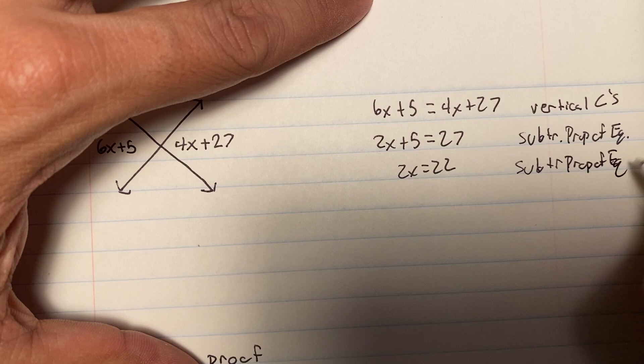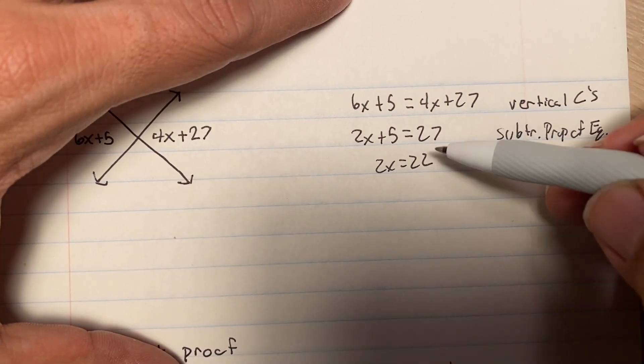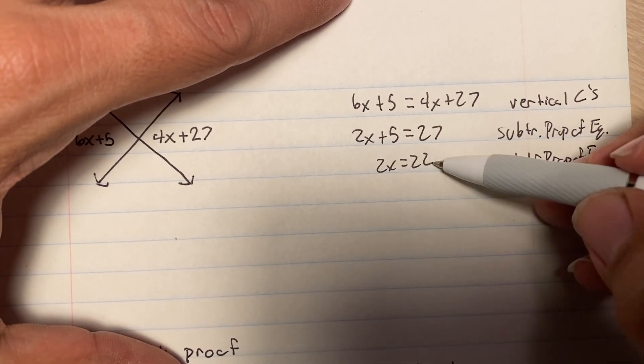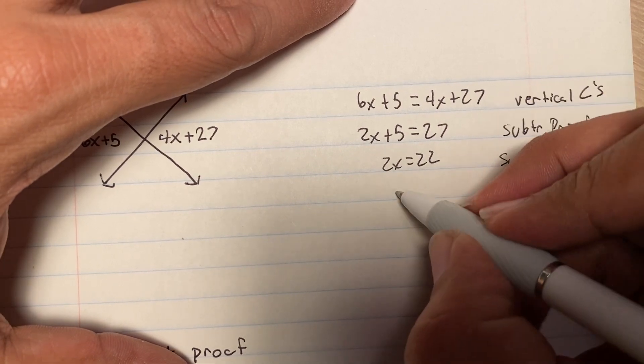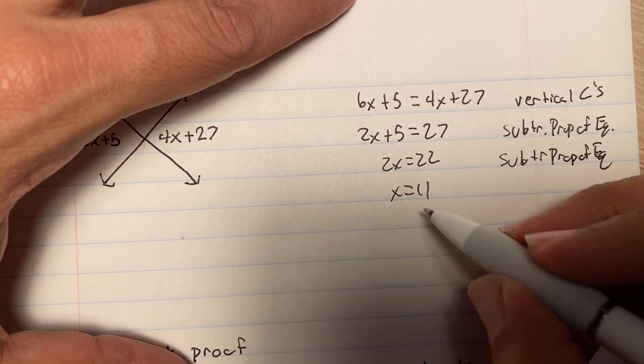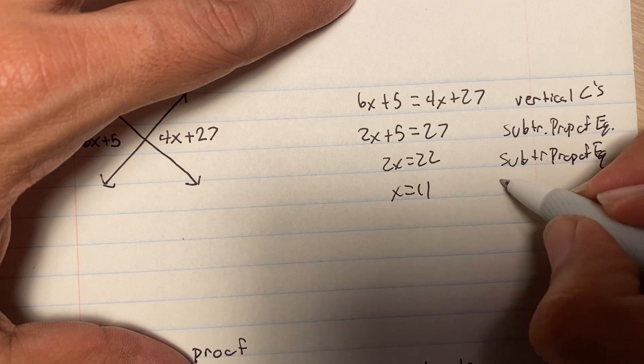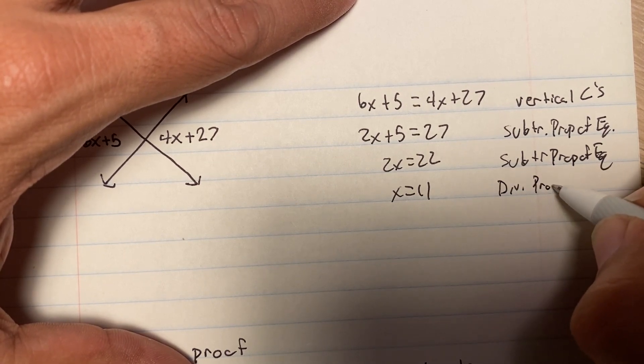So, what I'm writing on the right is how I got here. How did you get here? Then the last one, I have x equals 11. Someone's like, hey, how'd you get there? Oh, you did the division property of equality.